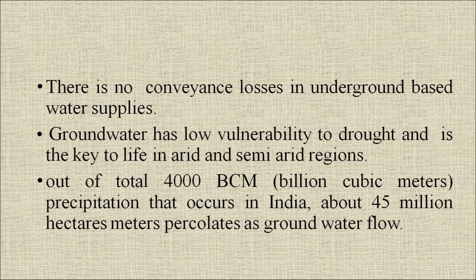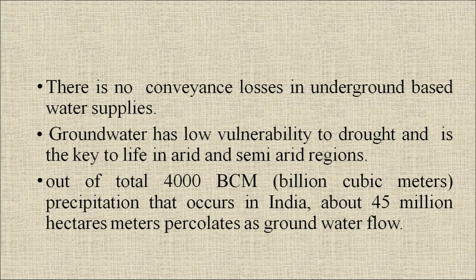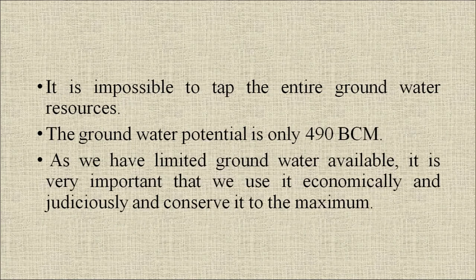Out of the total 4,000 billion cubic meters of precipitation that occurs in India, about 45 million hectare meters percolates as groundwater flow. However, it is impossible to tap the entire groundwater resources — the groundwater potential is only 490 billion cubic meters. As we have limited groundwater available, it is very important that we use it economically and judiciously and conserve it to the maximum.